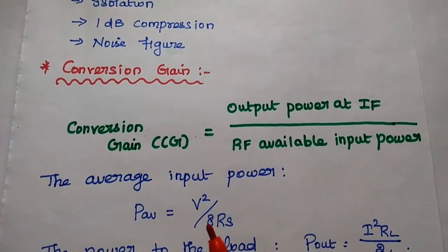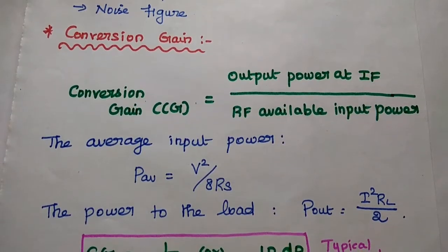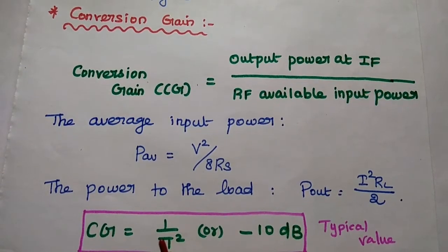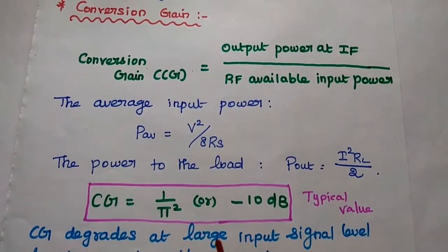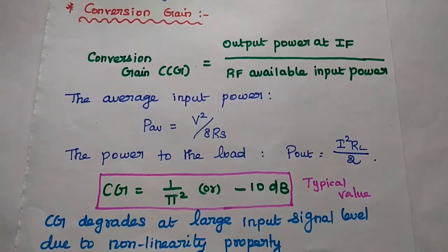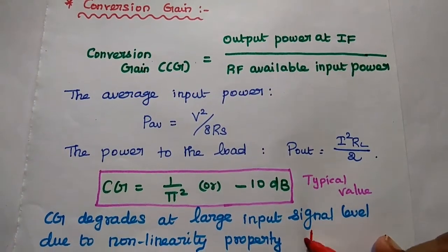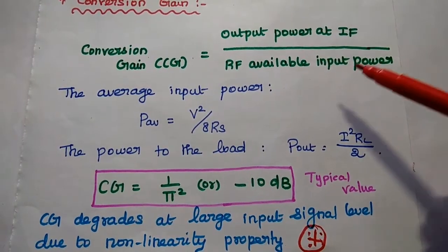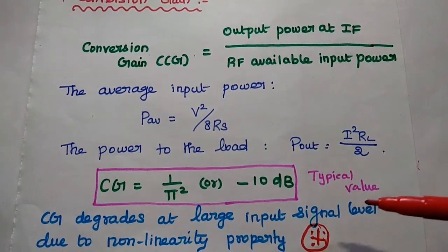Conversion gain is defined as the ratio of the IF output power to the available RF input power — simply, output to input, which is the gain of the mixer. The typical value is −10 dB or 1/π² for better performance. The conversion gain degrades at large input signal levels due to the non-linearity of the diode. If a very high input signal is provided, the conversion gain is affected because of the non-linearity property of the diode.